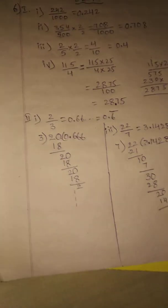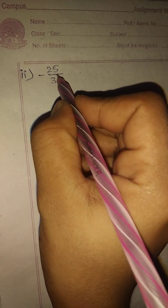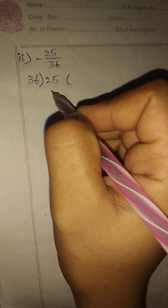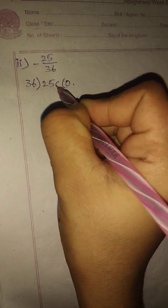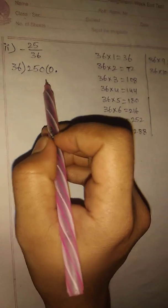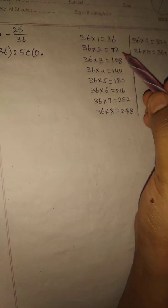Second problem: minus 25 by 36. The numerator 25 is less than the denominator 36, so take zero point. To help with division, write out the 36 times table: 36 ones are 36, 36 twos are 72, and so on. Now we have 250; check the 36 table for a value less than or equal to 250.